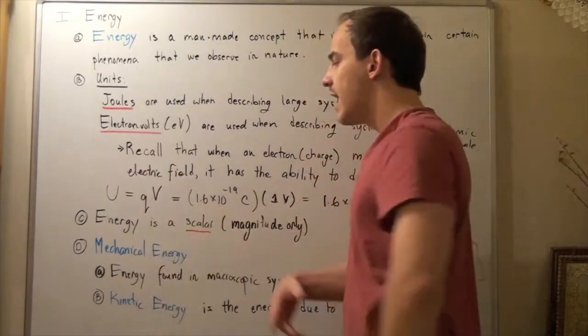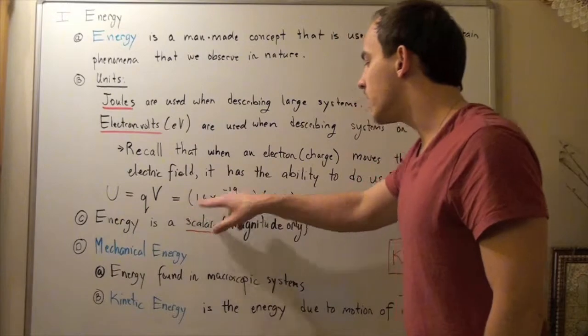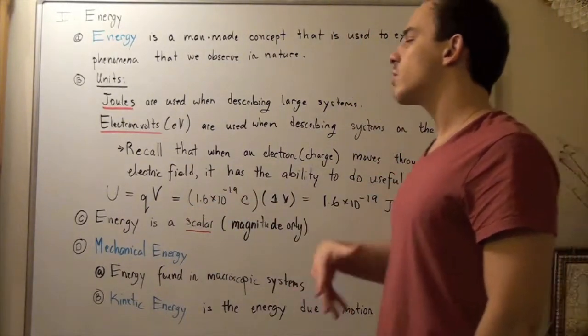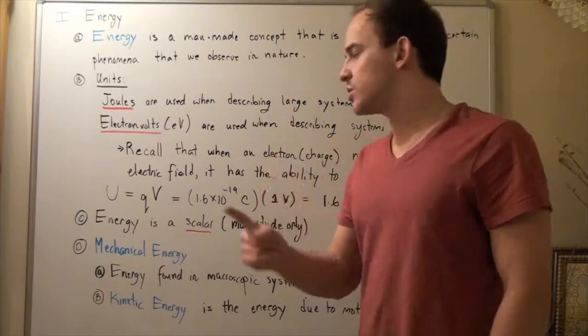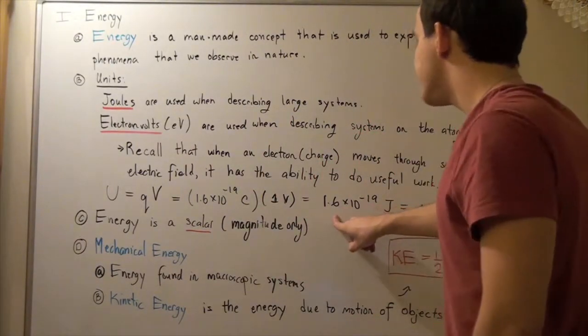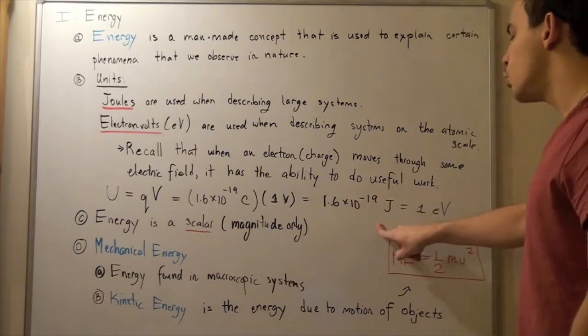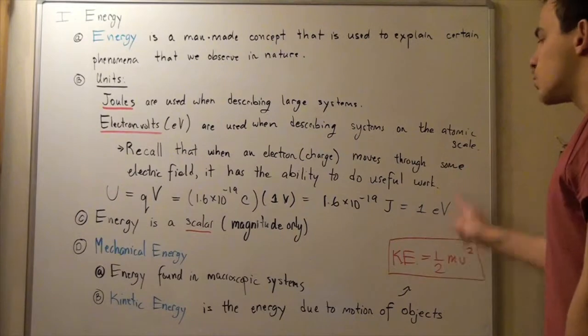And suppose our voltage is one volt. Well, then we can plug in our values and we see that our energy of one electron, when it moves through a voltage of one volt, has an energy of 1.6 times 10 to the negative 19 joules. And this is defined as one electron volt.